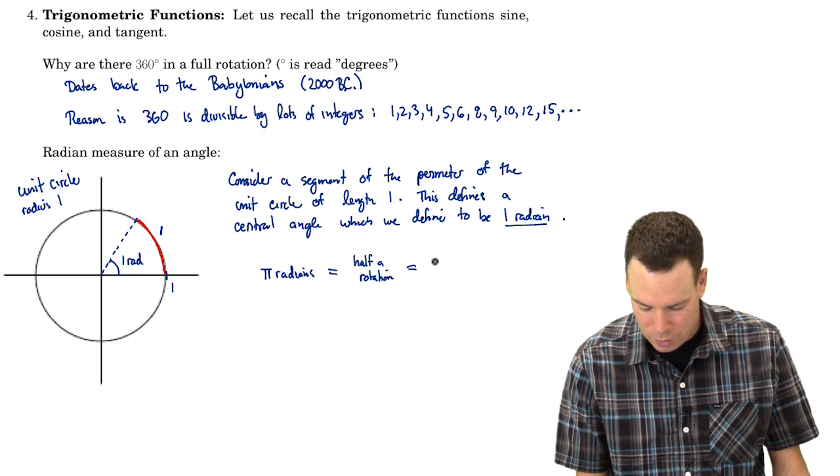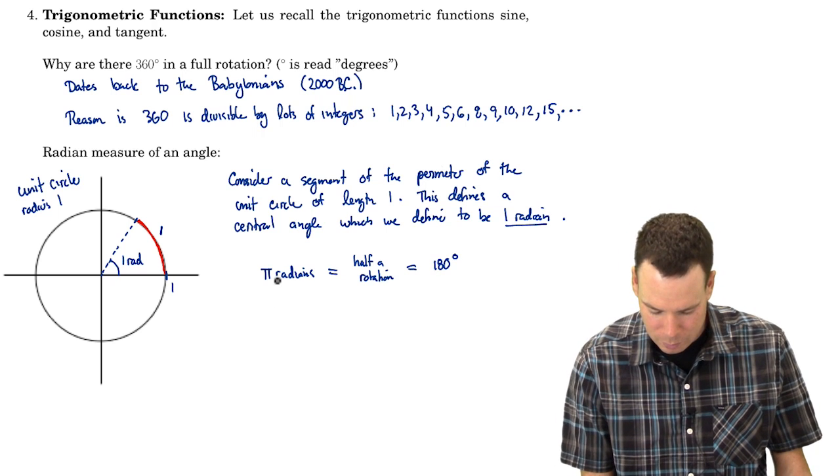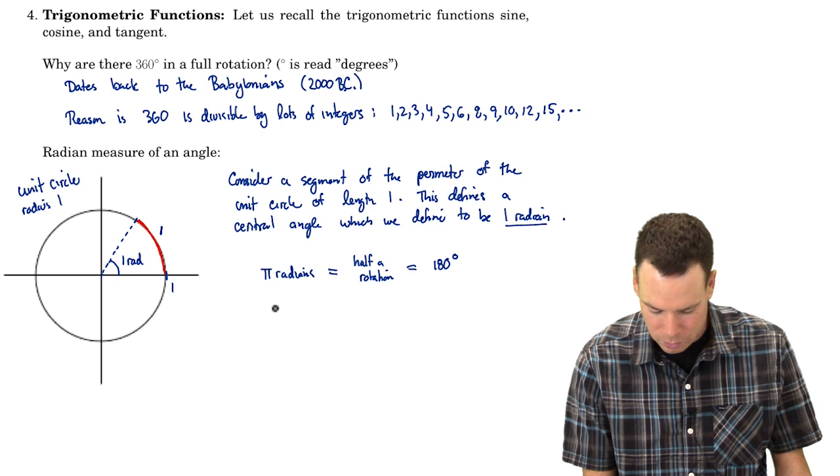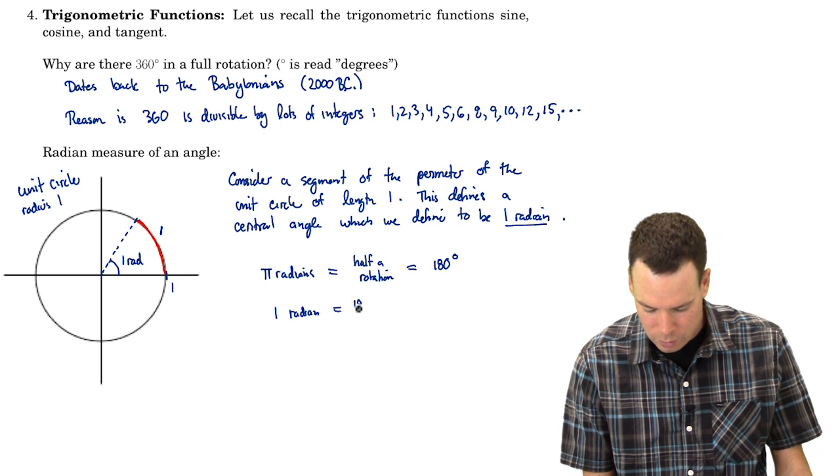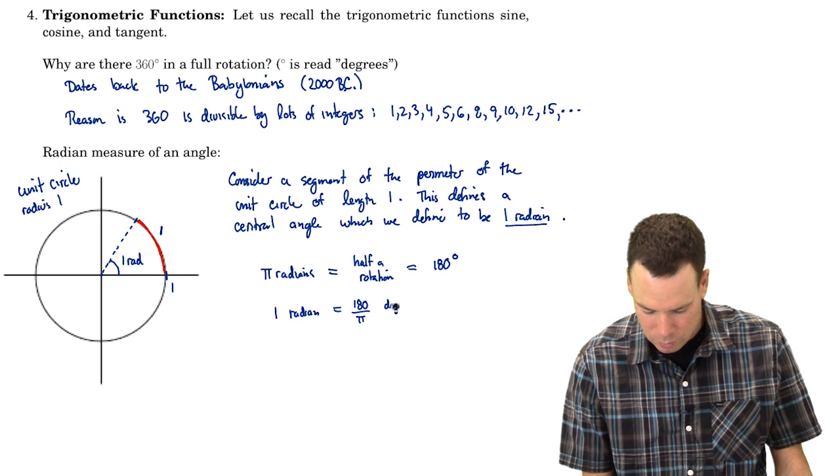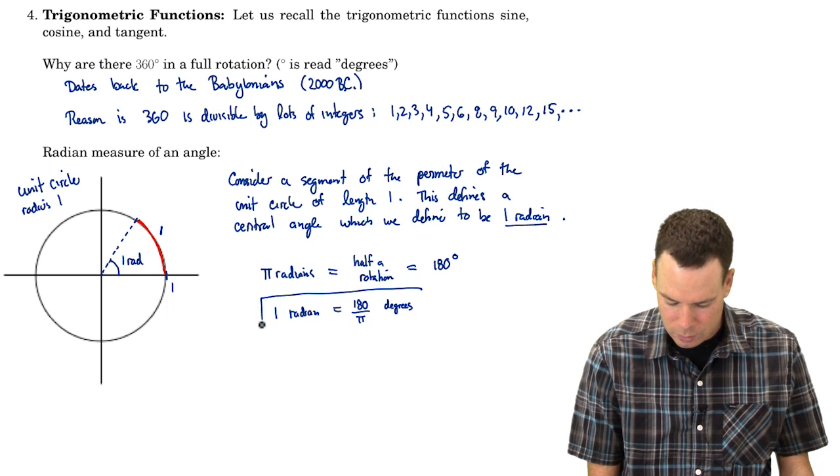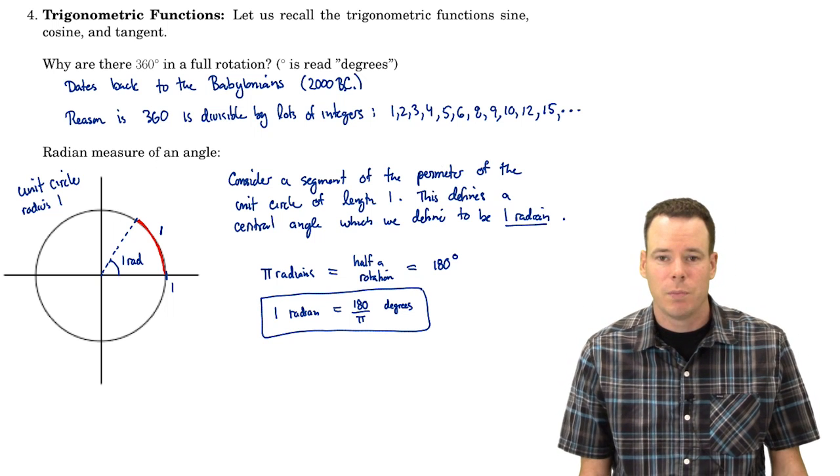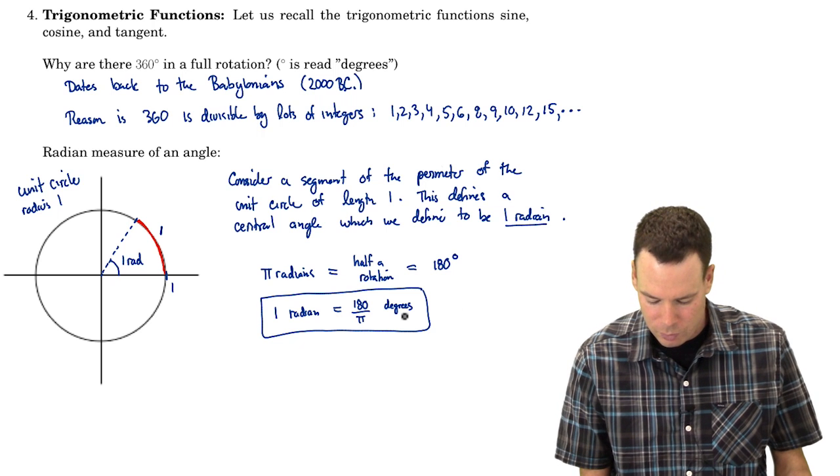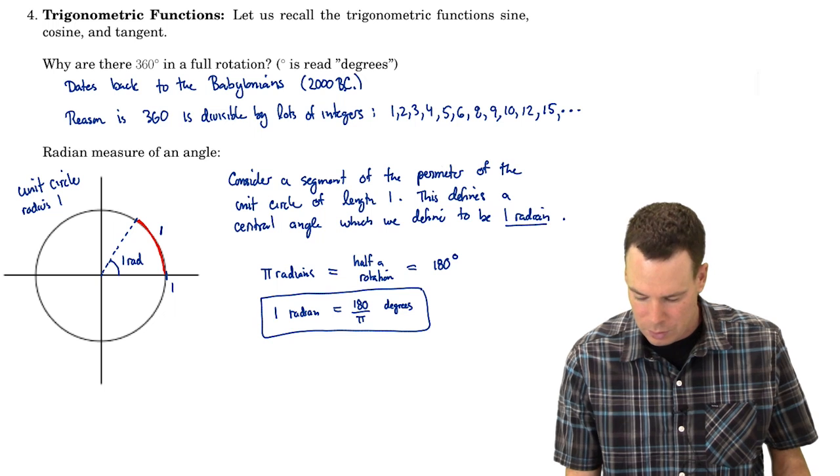But we know half a rotation in terms of degrees is 180 degrees. So what that means is π radians is 180 degrees, or in other words 1 radian, dividing both sides by π, is 180 over π degrees. And so there's our conversion.